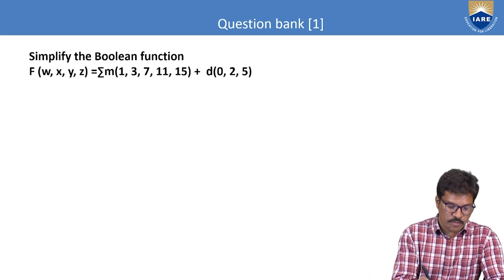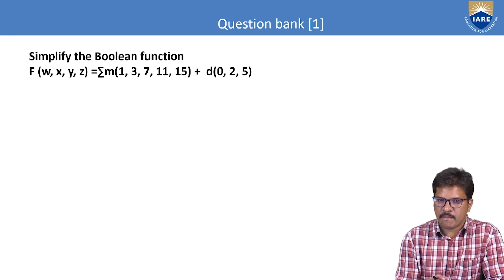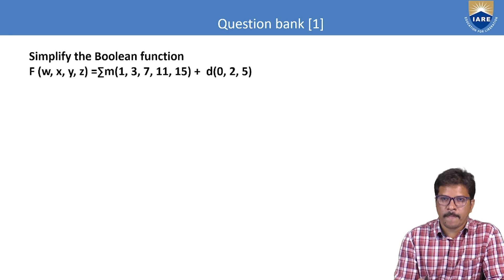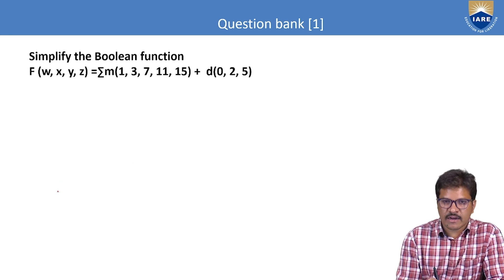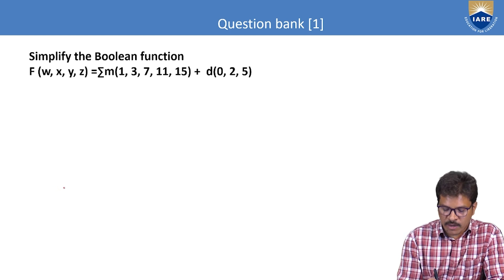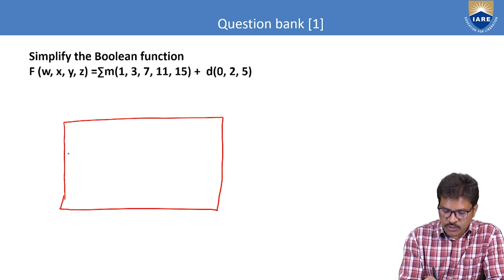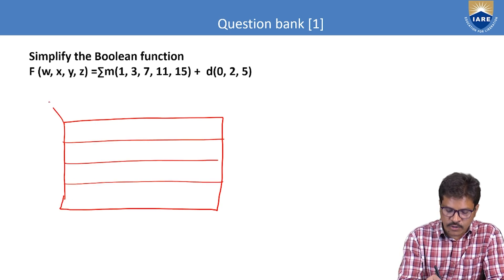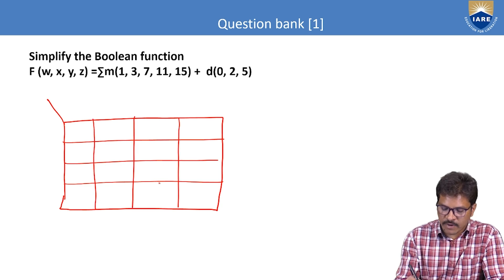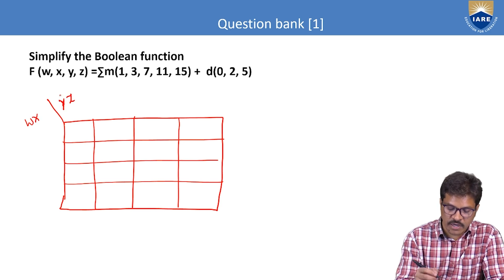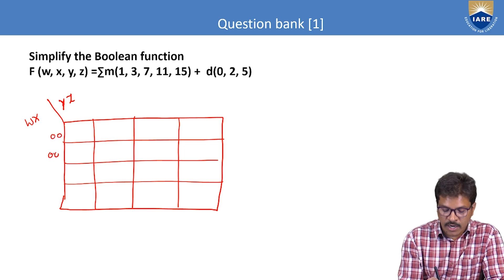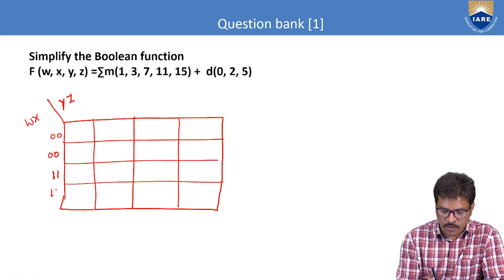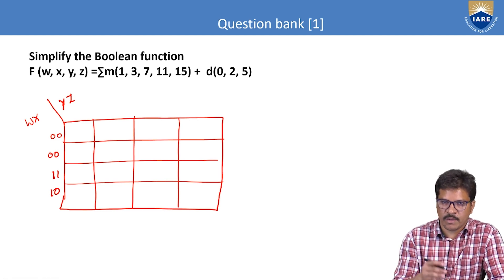Let us see the simplified Boolean function using KMAP. There are two ways: without don't care and with don't care. Before the don't care problem, let me give a shortcut on how to make a KMAP for four variables. For a four-variable KMAP, we create a map with 16 square boxes. Each square box represents each minterm. I am taking two variables row-wise and two variables column-wise — WX in row wise and YZ in vertical wise — arranged in gray code order, to allow adjacency between one minterm and another.